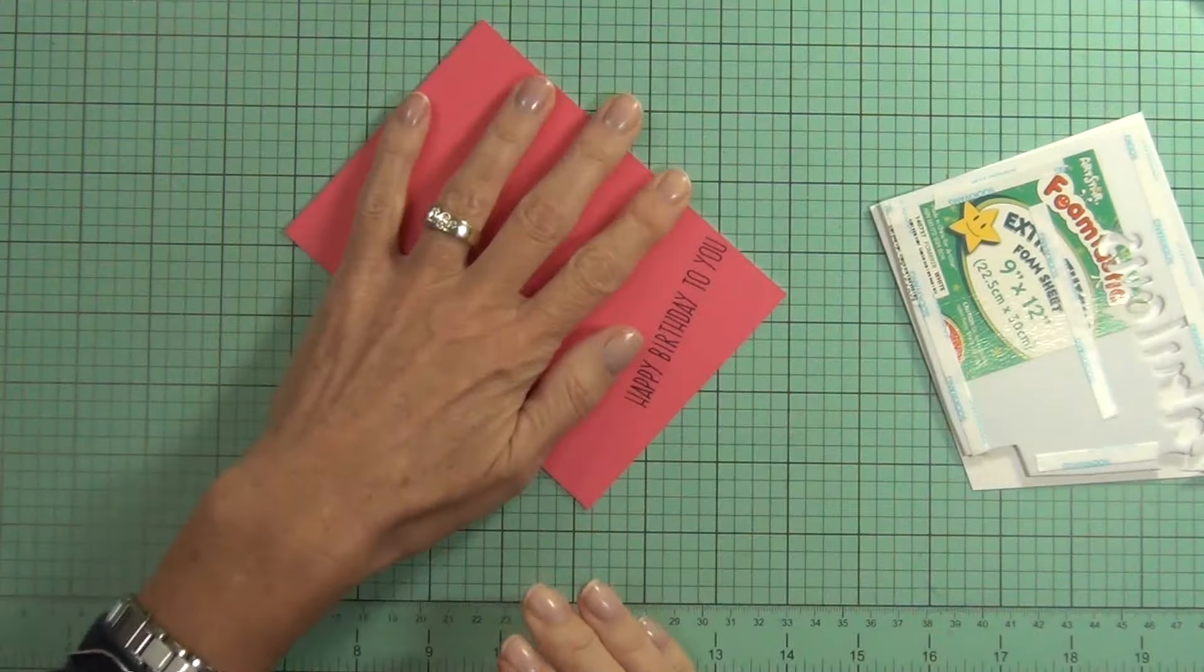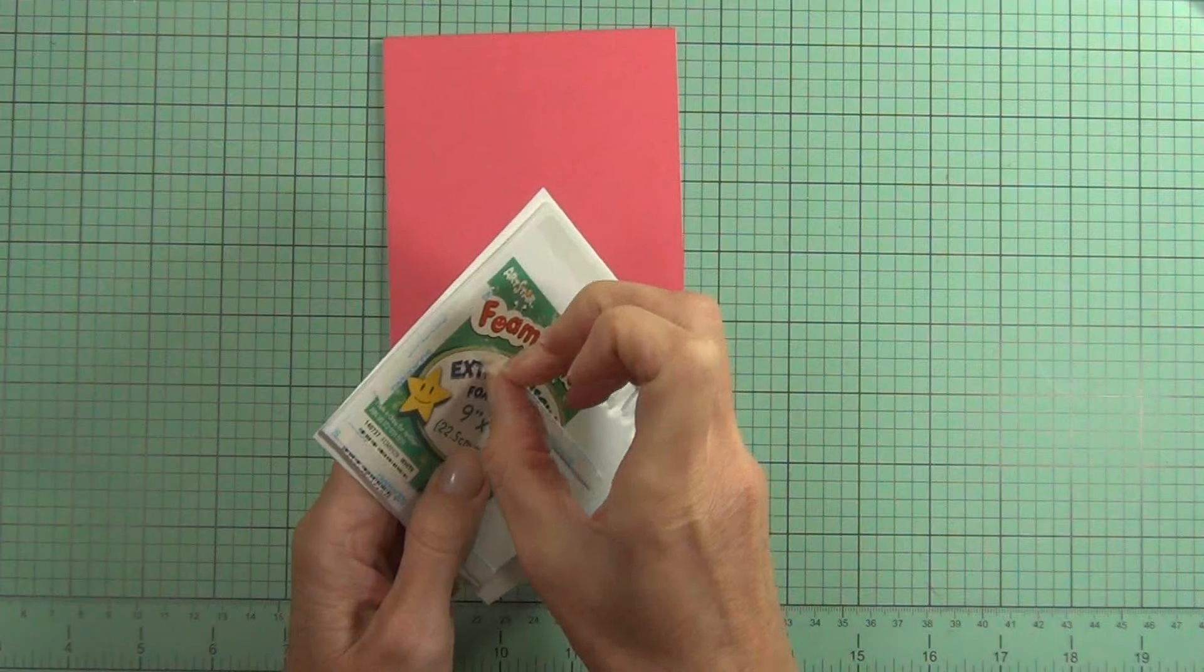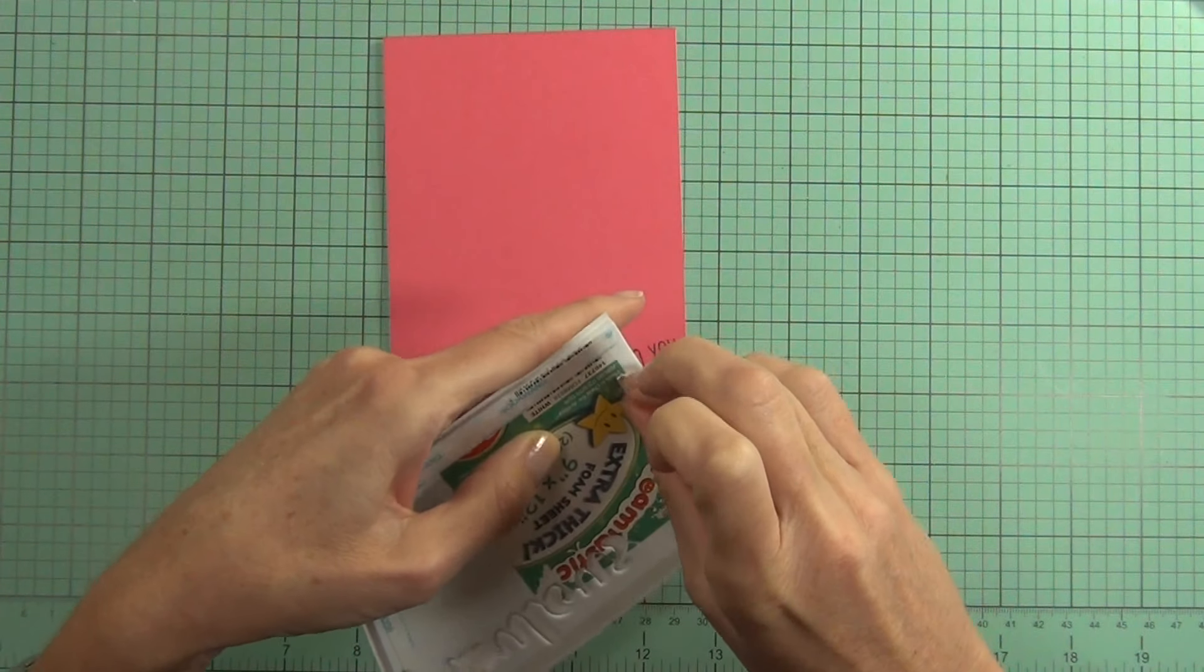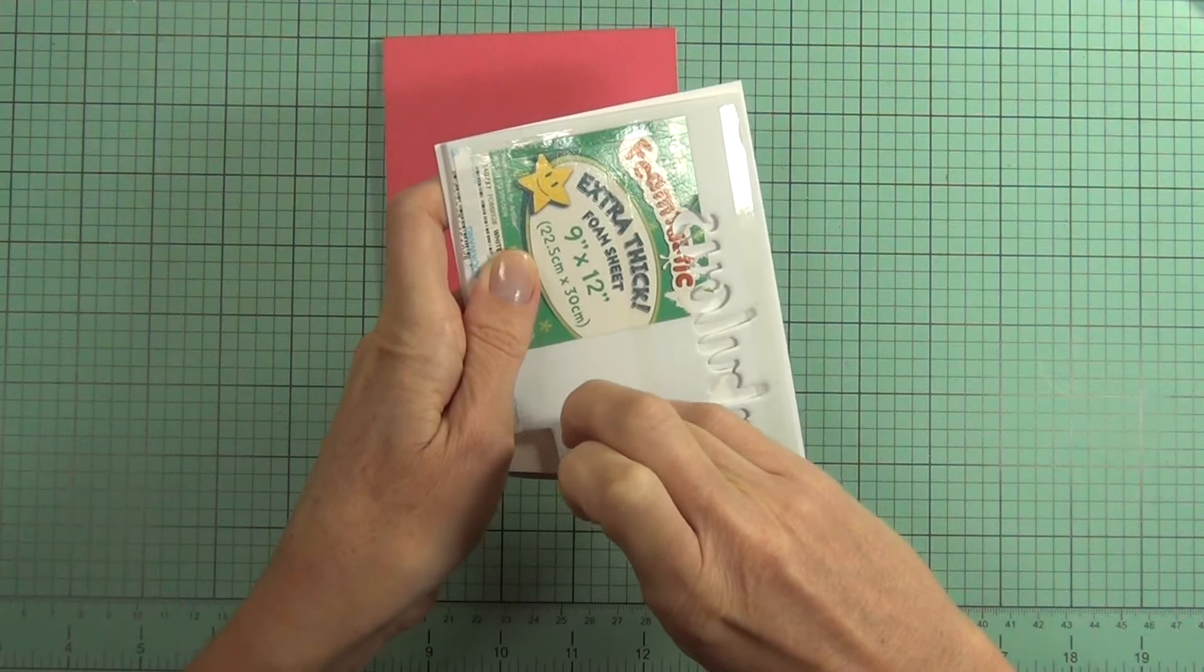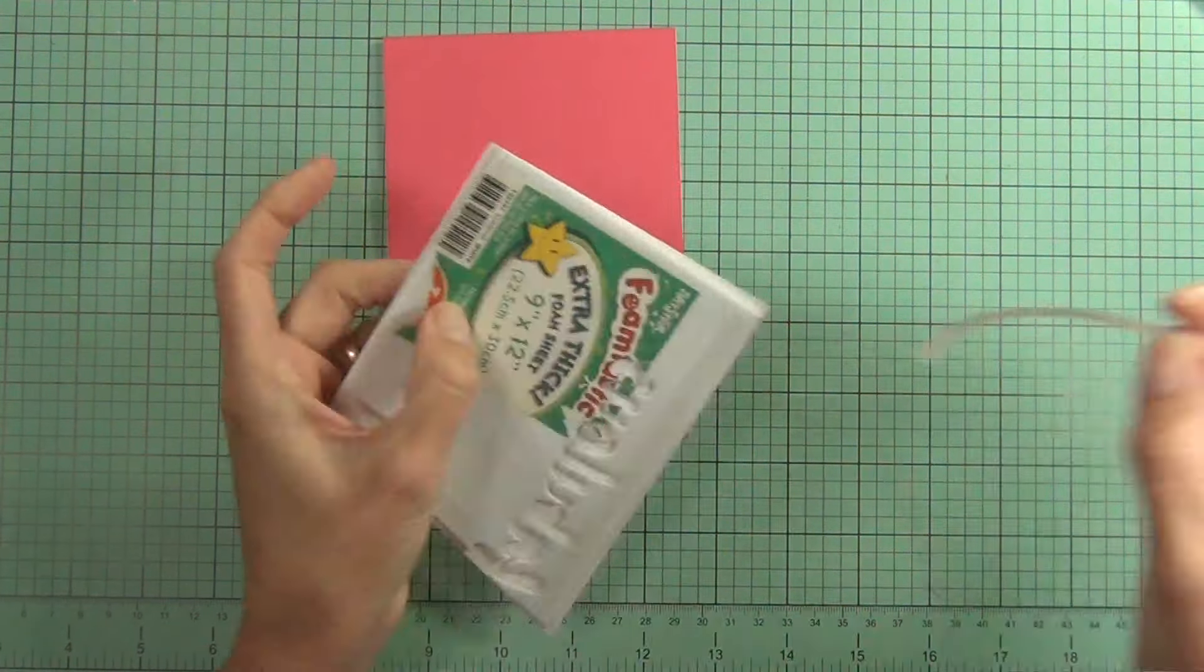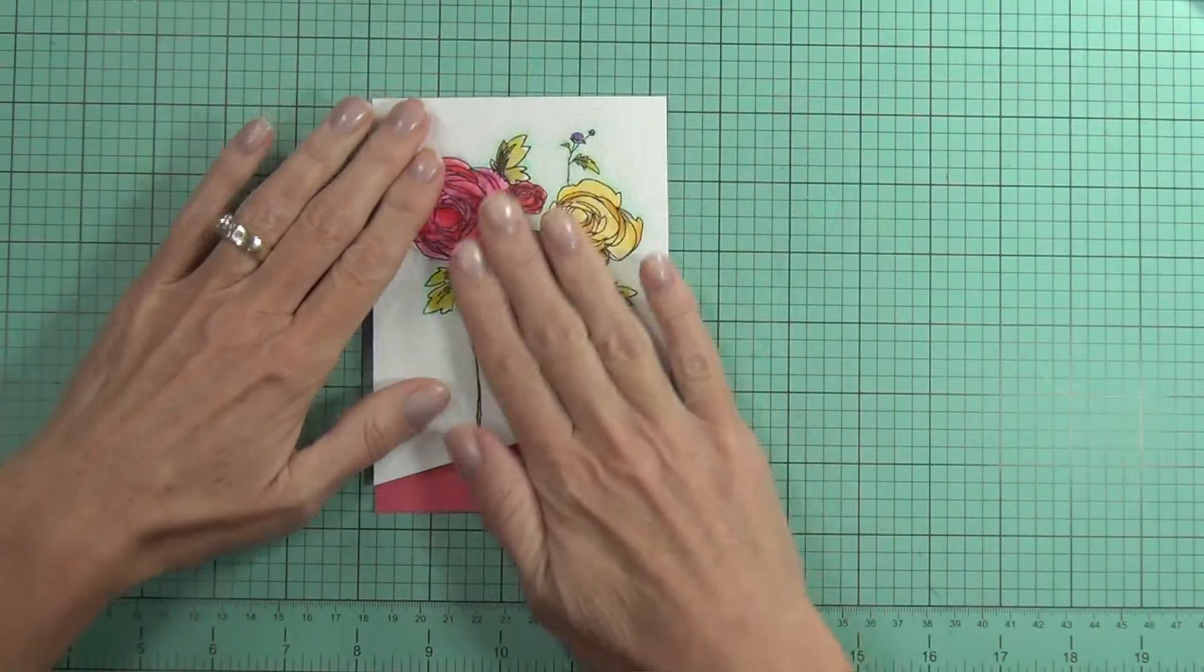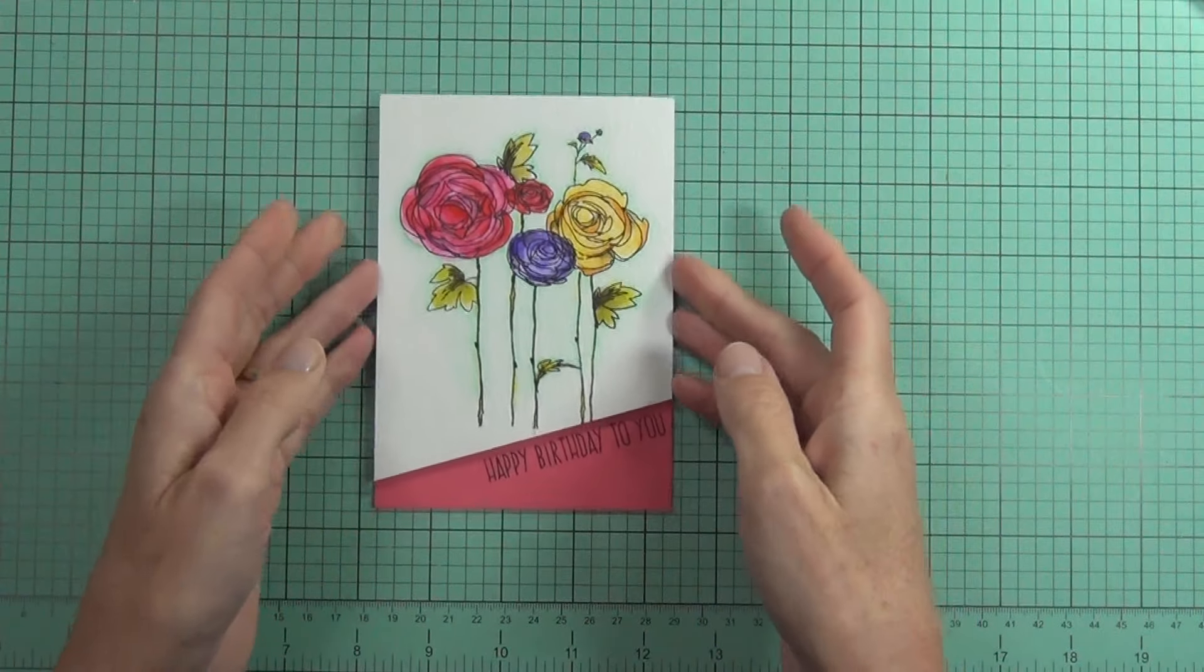I've already added some fun foam to the back of my watercolor panel, and I've used score tape because I find that works really well. There wasn't a lot of warping on this watercolor panel because the Tombow markers don't actually need a lot of water to activate them, and the score tape holds that really well.